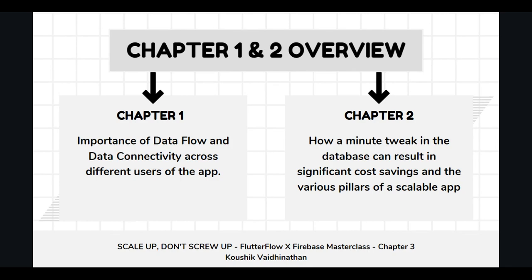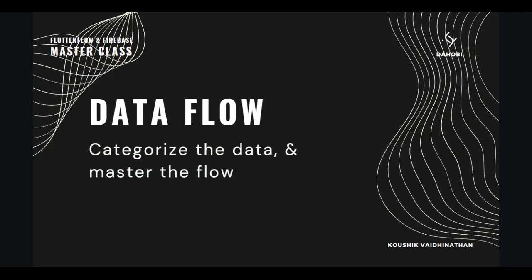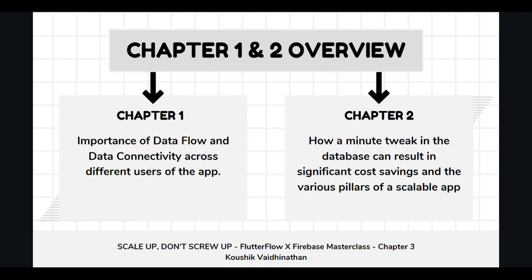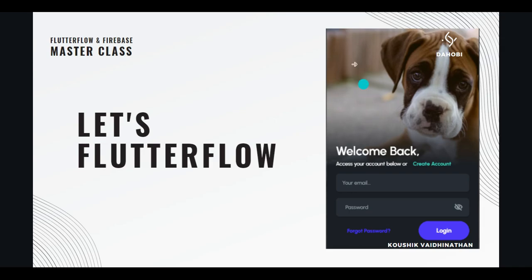We saw that a minute tweak in the database could result in more than 50% cost savings on a monthly basis — a significant cost cut. The second part of Chapter 2 was dedicated to discussing the various pillars it takes to build scalable applications and the core essence of what a scalable app is. Now, in this chapter, we are going to talk about data flow and how to master it.